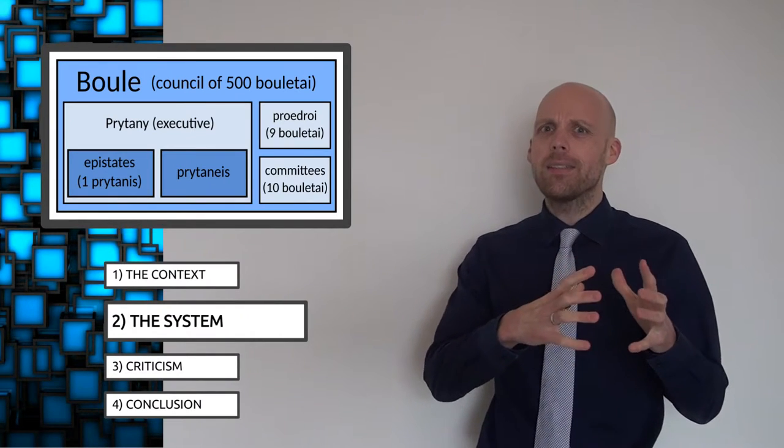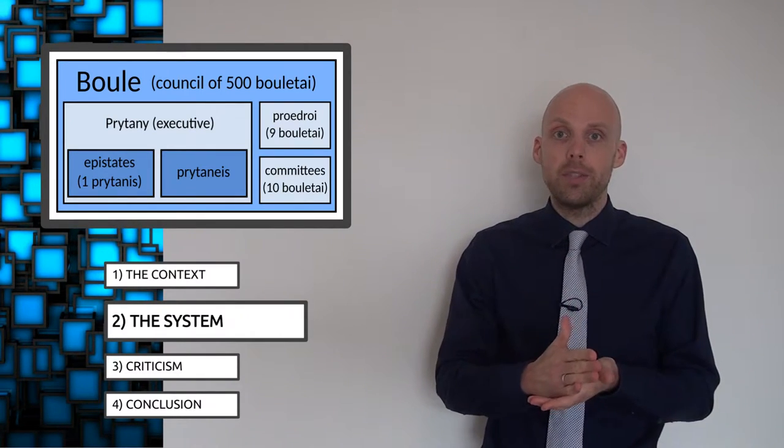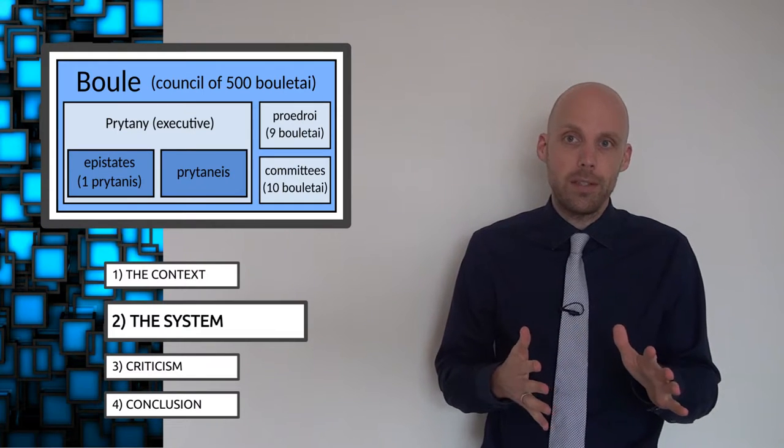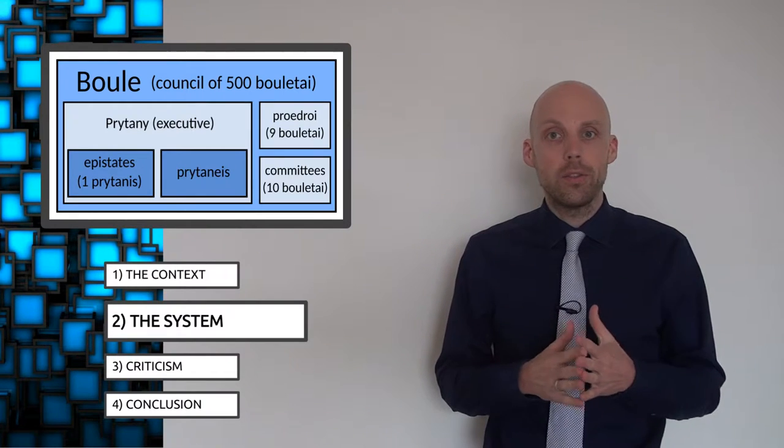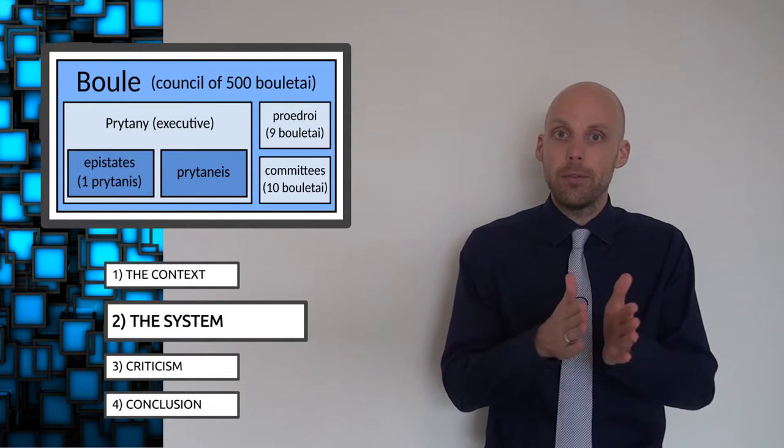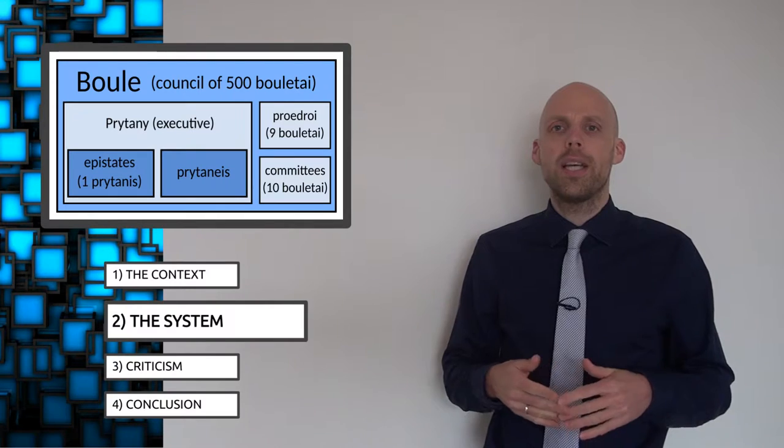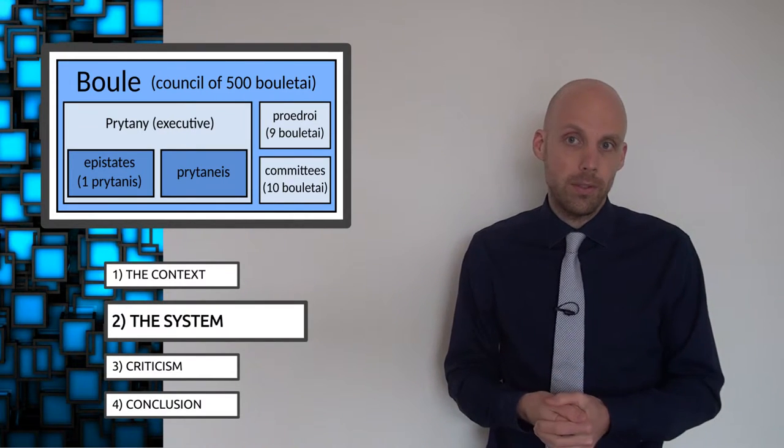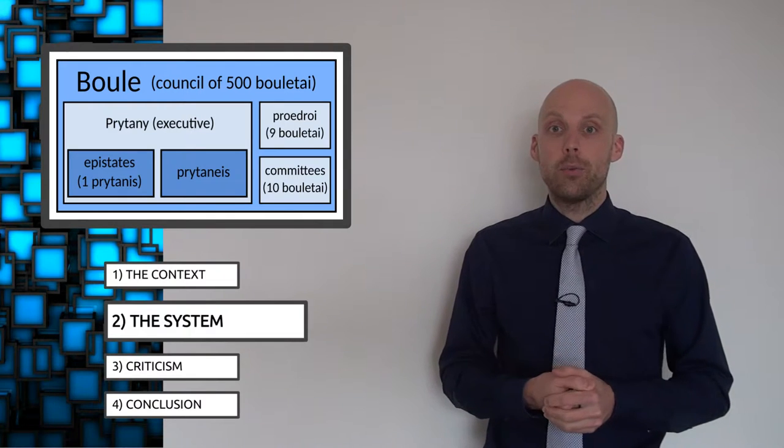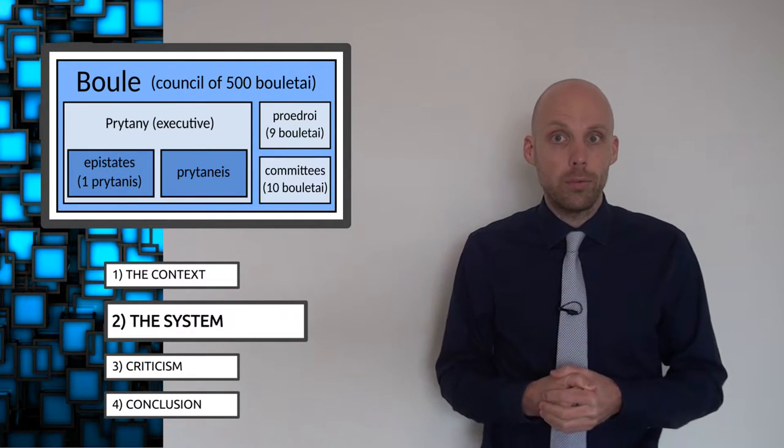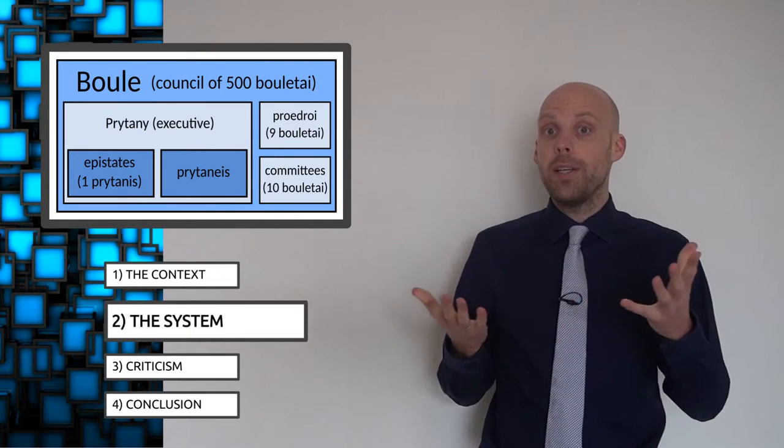So the Pritanees served every single day during their term, taking care of the day-to-day business of the state. They would also receive ambassadors. Furthermore, one of them would be selected by lot to serve as epistates, meaning figurehead. The epistates would carry the keys to the city's archives and funds. You might compare him to a prime minister, except his term only lasted 24 hours and no one served twice. King for a day, if you will.